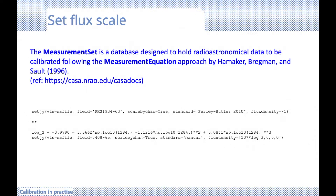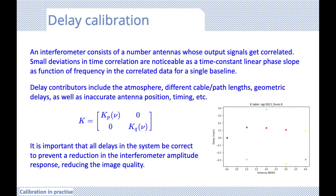CASA makes this easy. Setjy has a number of models for planets and moons you can display through PlotMS, as well as existing model data for primary calibrators. If you have a model and know the Stokes parameters, you can also input this as manual input into setjy by specifying your flux density models.